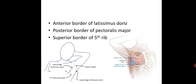The triangle of safety is formed by the anterior border of latissimus dorsi, the posterior border of pectoralis major, and the superior border of the fifth rib.